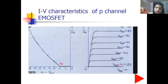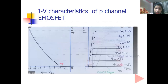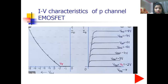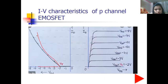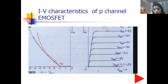For P channel MOSFET, only the polarity changes. Where N channel has positive VGS, P channel has negative VGS. The drain characteristics for P channel similarly show current increasing in the Ohmic region and then saturating — but with negative VGS values. The three regions are the same: Ohmic region, saturation region, and cut-off region. These are the characteristics of both N channel and P channel MOSFET.